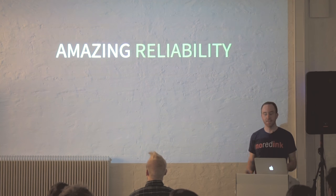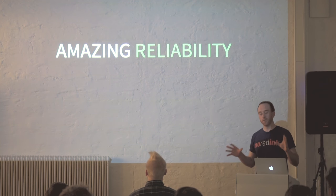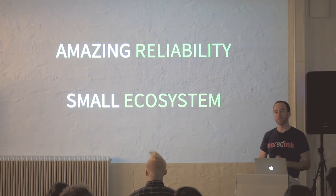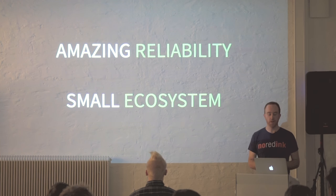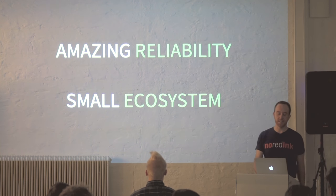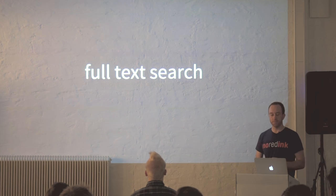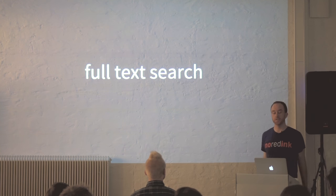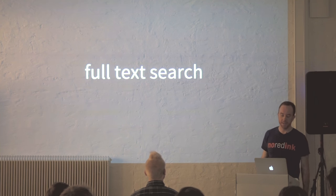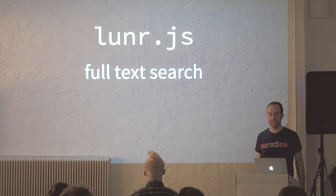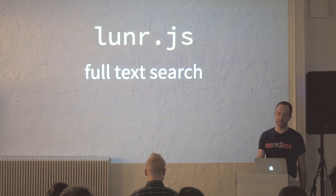Now, having said that, this means that we get this amazing reliability. But Elm is still a relatively new language, so the ecosystem around Elm is still relatively small. To reconcile these things, we have to adopt different measures when we want things like full-text search. We wanted to do some full-text search in our application and couldn't find an Elm library that would just do this for us, so we turned to Lunr.js and decided to do some JavaScript interop to make that work.